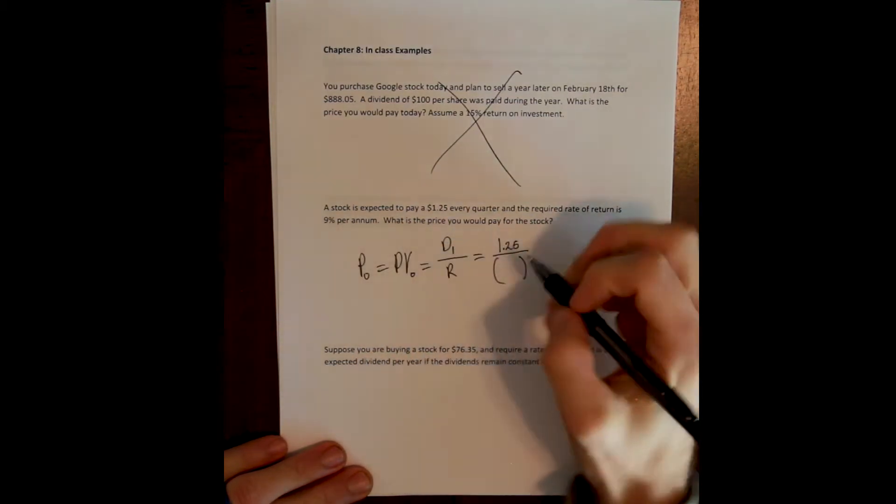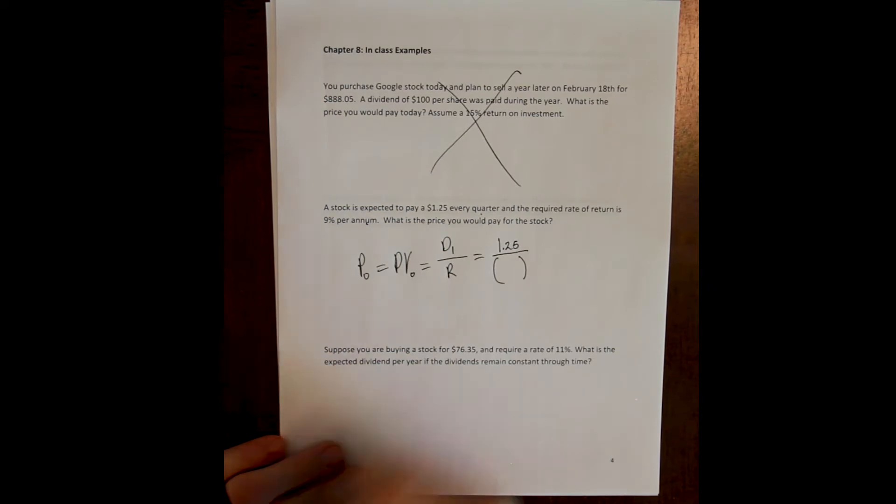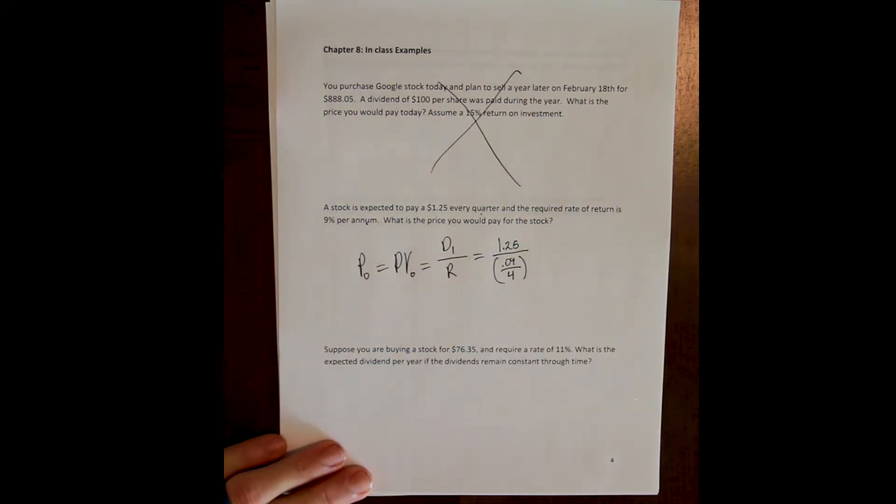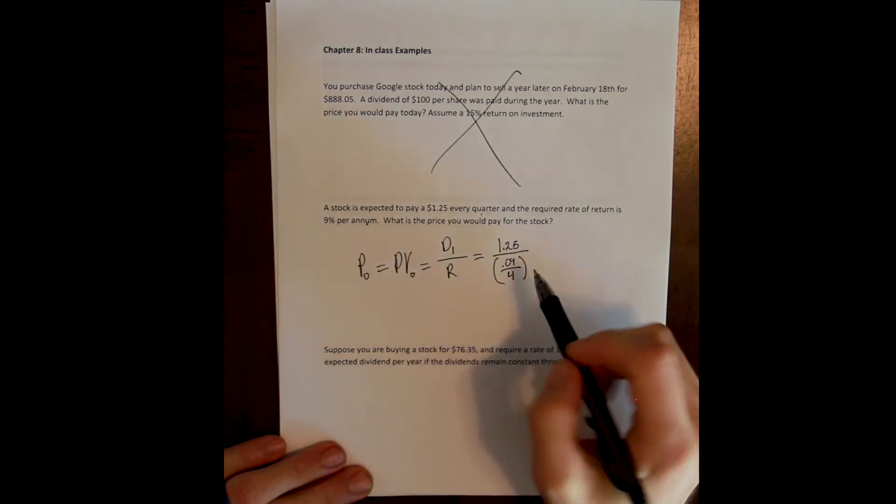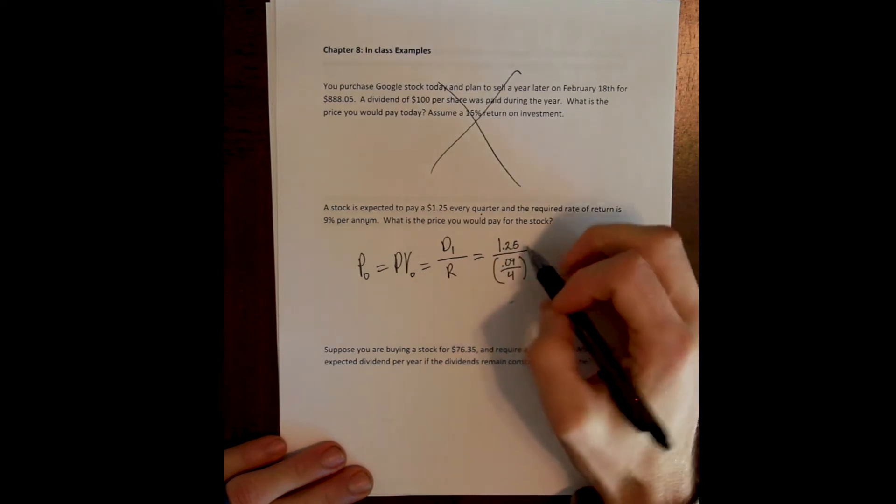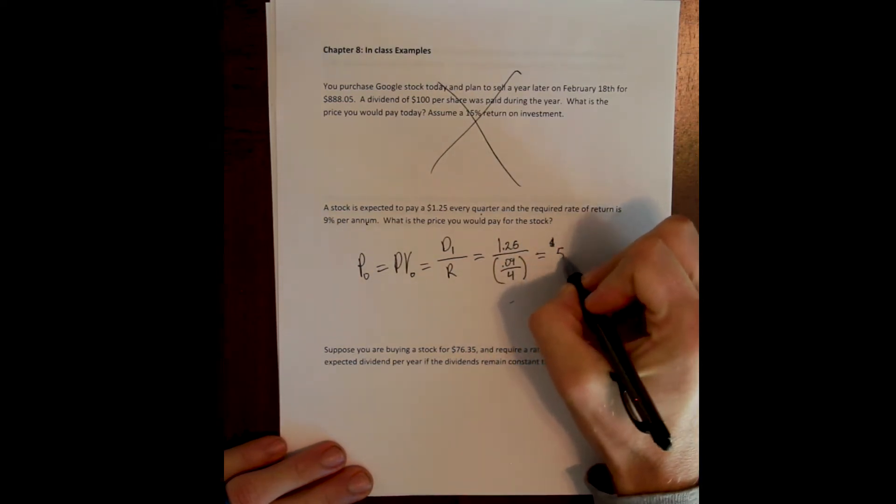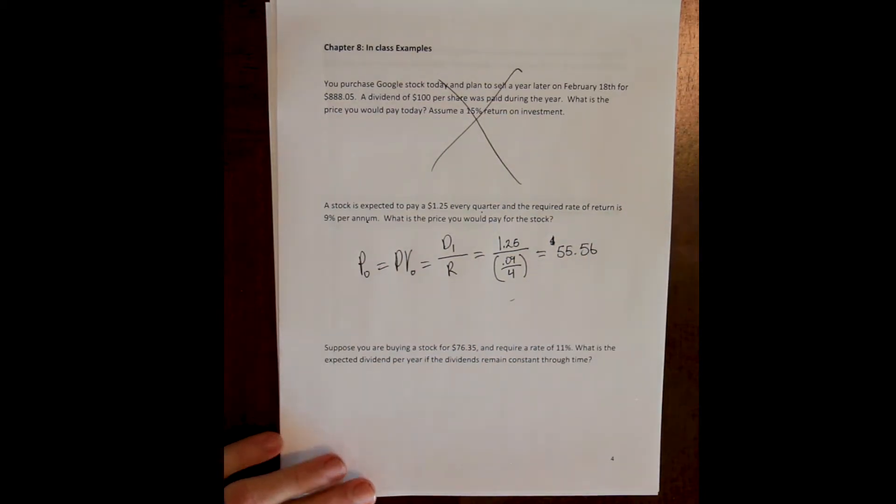The rate is 9% per year, but the dividend is paid every quarter, so we need to convert our rate to be a quarterly rate. Remember, there's no calculator function here, so this all needs to be done by hand. And we calculate the price of the share of this stock to be $52.56.